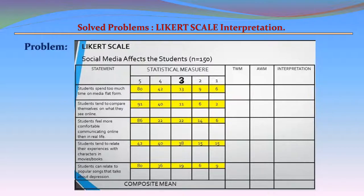Statement 2: Students tend to compare themselves with what they see online. The statistical measures from scale 5 to 1 are: 91, 40, 11, 6, and 2. Statement 3: Students feel more comfortable communicating online than in real life.